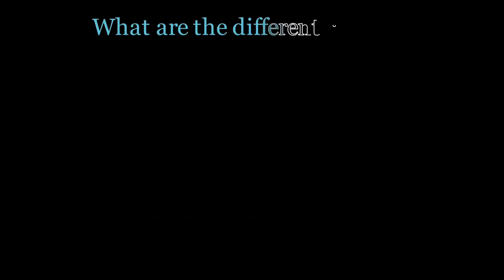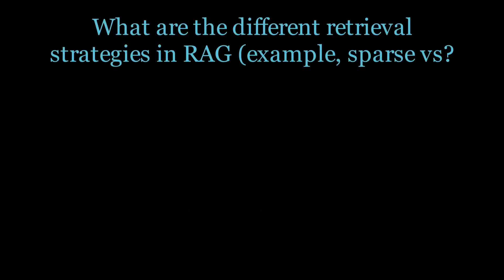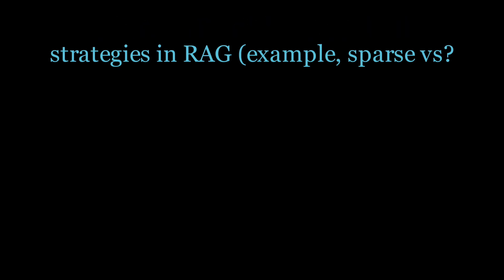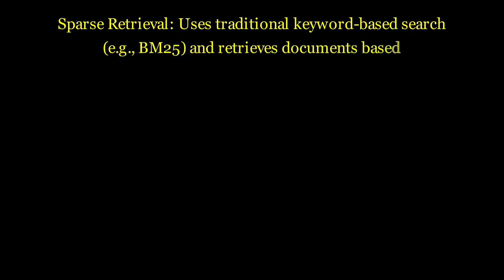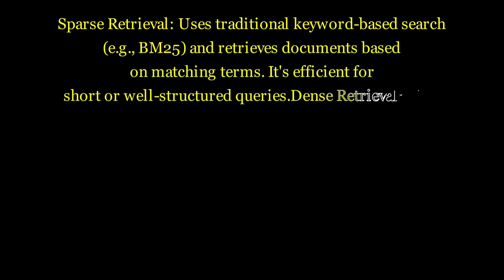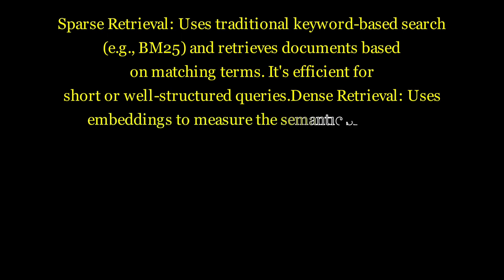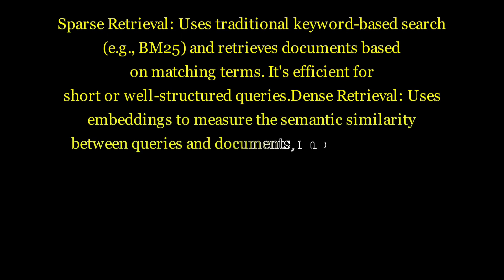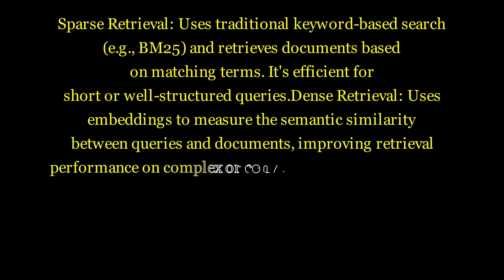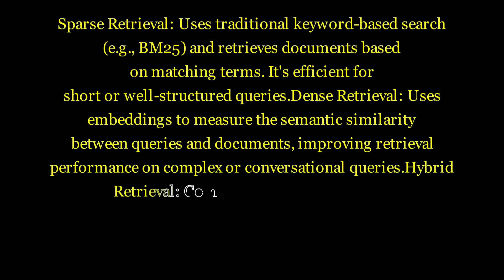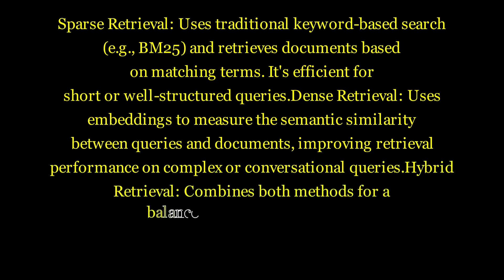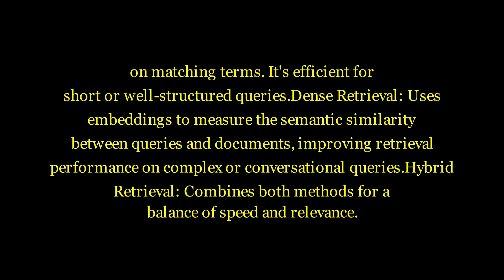What are the different retrieval strategies in RAG? Sparse retrieval uses traditional keyword-based search such as BM25 and retrieves documents based on matching terms; it is efficient for short or well-structured queries. Dense retrieval uses embeddings to measure semantic similarity between queries and documents, improving retrieval performance on complex or conversational queries. Hybrid retrieval combines both methods for a balance of speed and relevance.